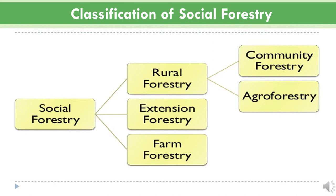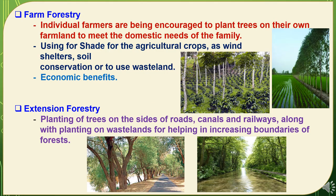Now we will study about the classifications of Social Forestry. Social Forestry is classified into three types: rural forestry, extension forestry, and farm forestry. Rural forestry is again divided into two types: community forestry and agro forestry. In case of farm forestry, individual farmers are encouraged to plant trees on their own farmland to meet the domestic needs of the family. Farm forestry is used for shade for agriculture crops, as wind shelters, for soil conservation, and to use wastelands by making forestry, and it has economic benefits as well.